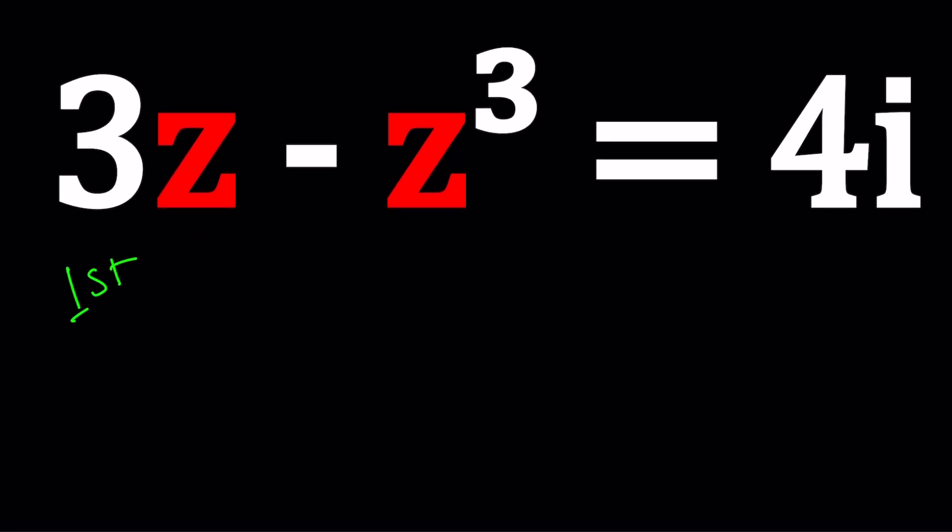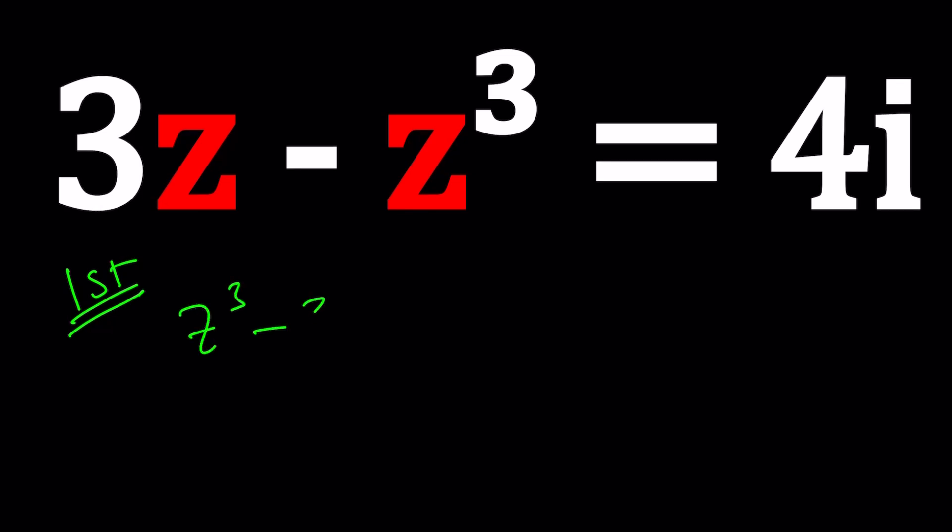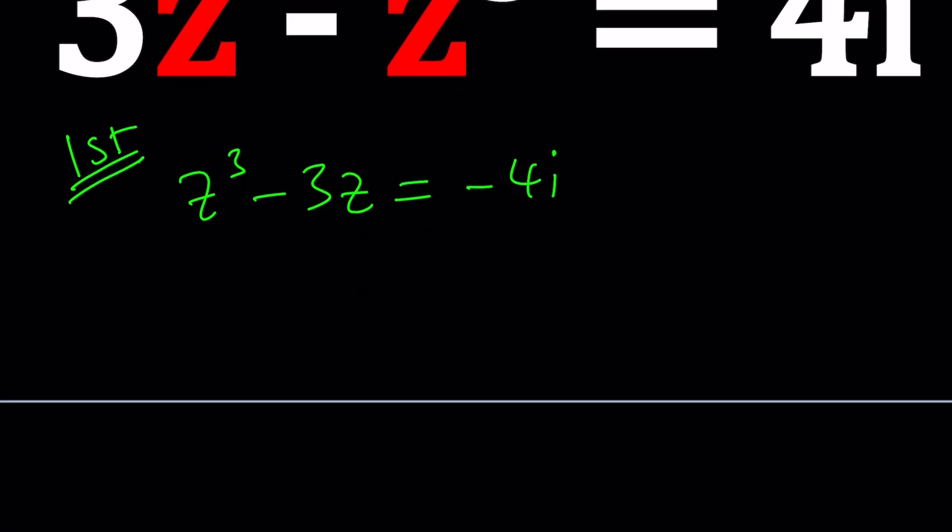Let's start with something called first. I want to invert this. I don't like z cubed being negative. So why don't we write it as z cubed minus 3z equals negative 4i. Now we're going to use the cubic formula. To use the cubic formula, you do need the following identity: (a+b)³ - 3ab(a+b) = a³ + b³.